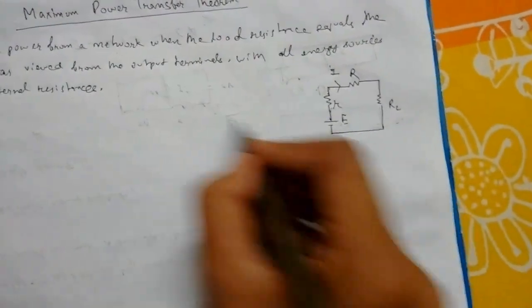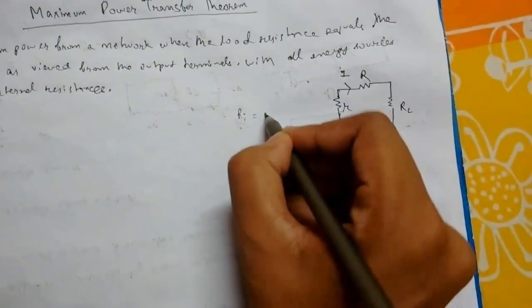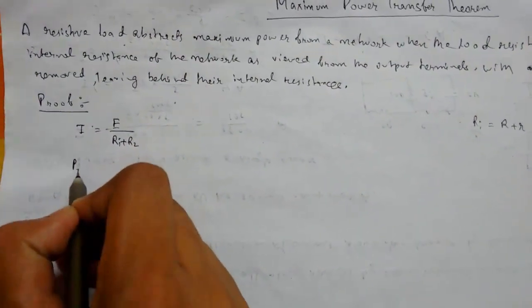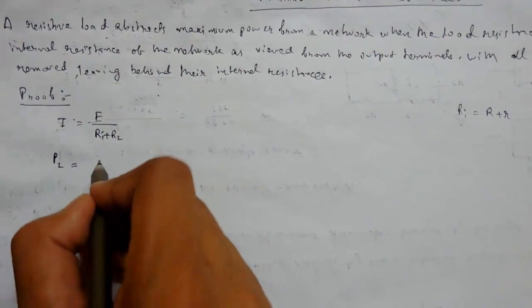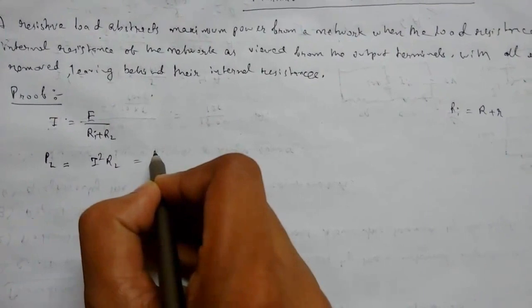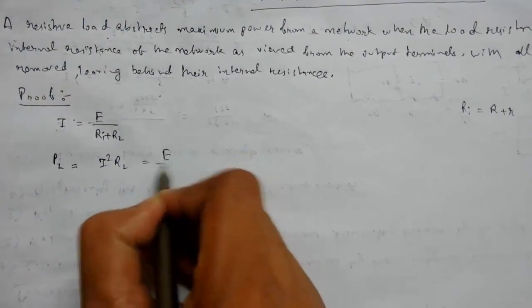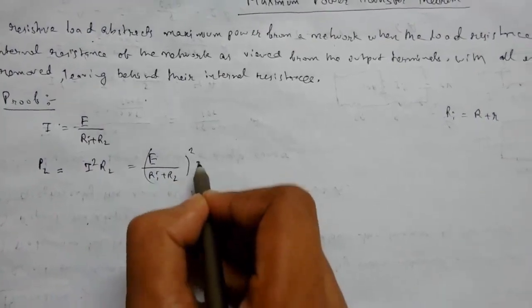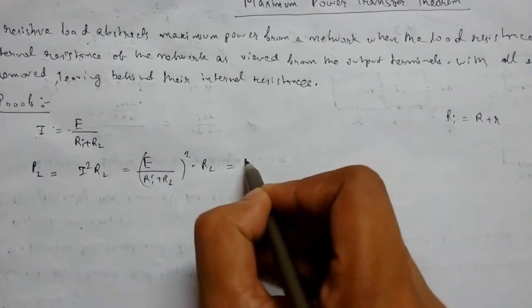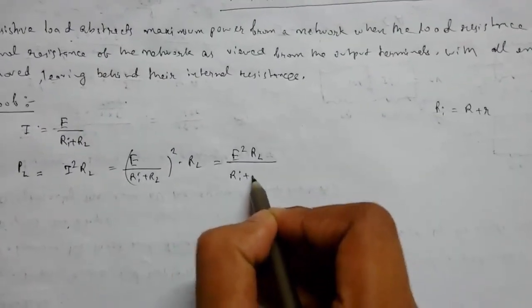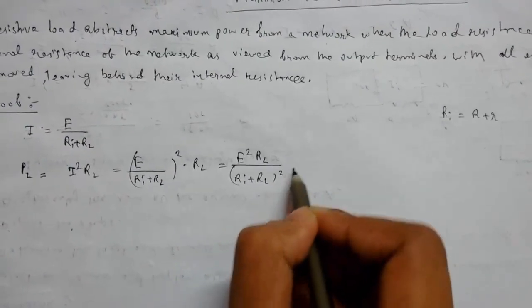So power across the load resistance RL will be I²RL, which equals (E/(RI+RL))² × RL = E²RL/(RI+RL)².